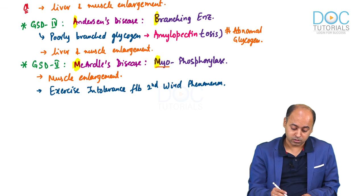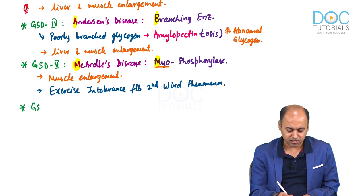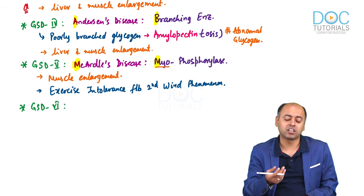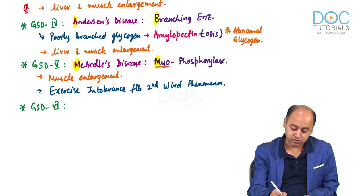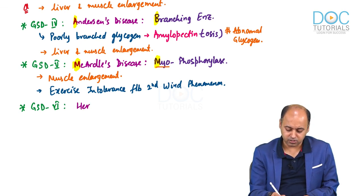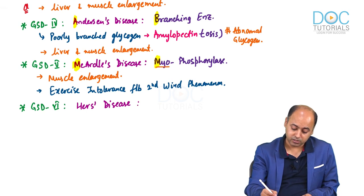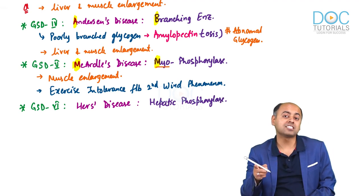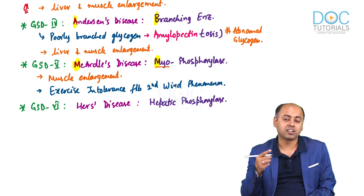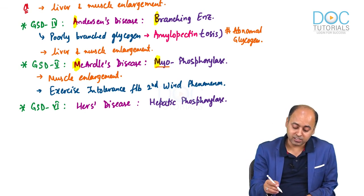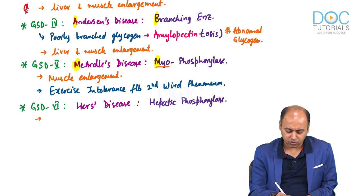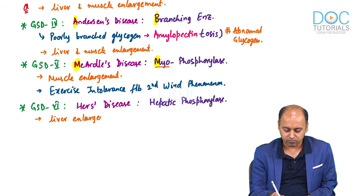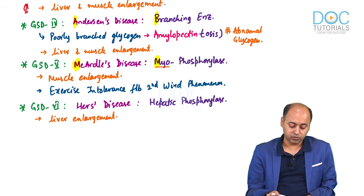Moving on to type 6, which is a very mild type of GSD — sometimes it may not even present to the clinic. Type 6 is described as Hers disease. Here the deficient enzyme is only the hepatic phosphorylase — phosphorylase only in the liver is deficient. Gluconeogenesis in this case will be normal, so hypoglycemia will not be severe — it will be mild to moderate. Because only the liver enzyme is deficient, only liver enlargement will occur.